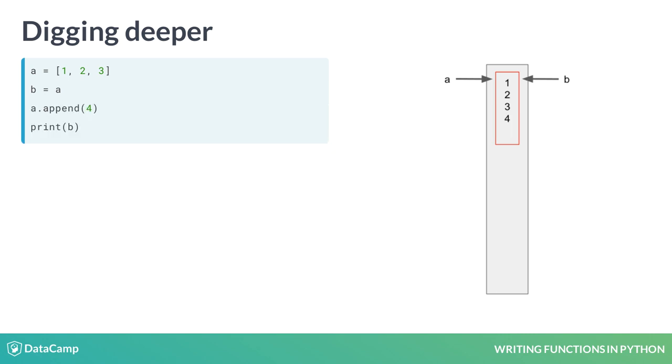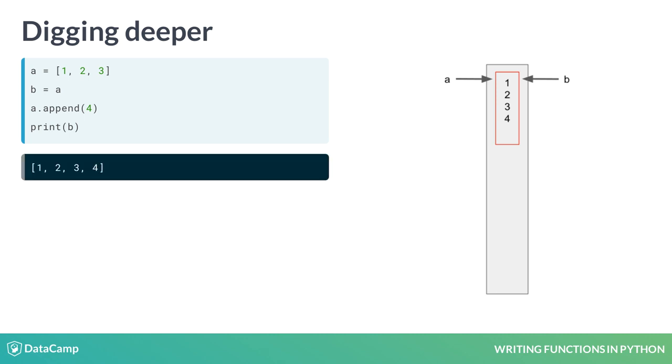So, if we were to append 4 to the end of a, both variables get it, because there is only one list. Likewise, if we append 5 to b, both variables get it.